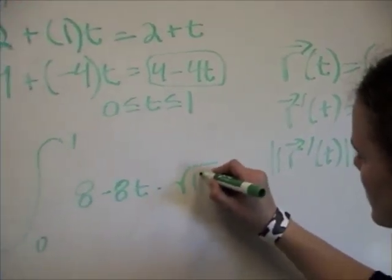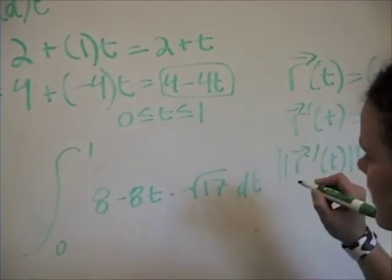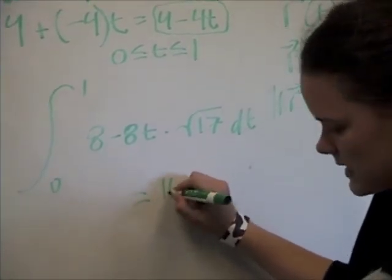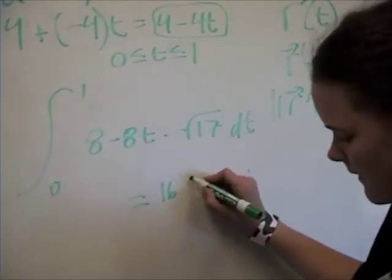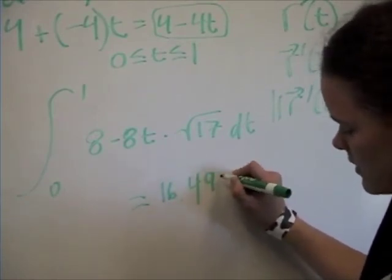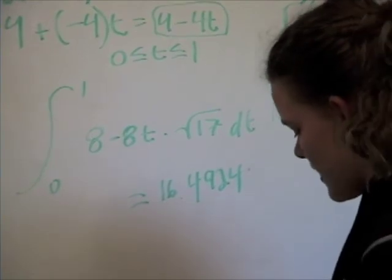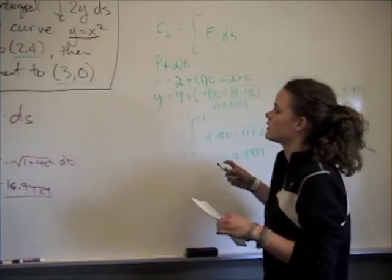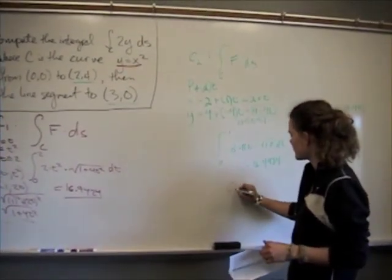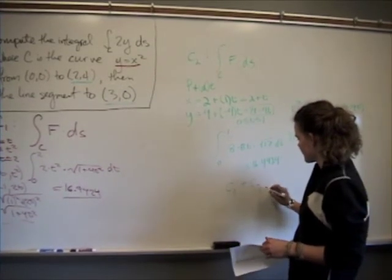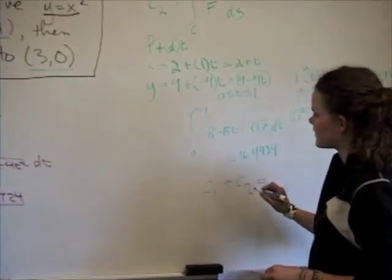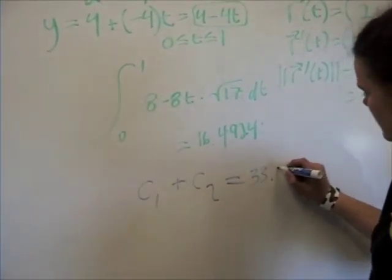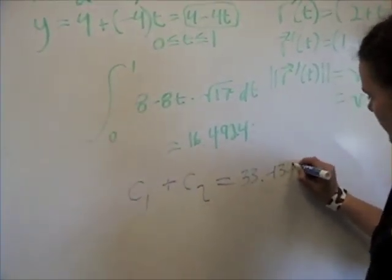When we put that into a calculator we come out with the answer 16.4924. Now with both path integrals computed, to get the total we add them together: C1 plus C2 equals 33.4348.